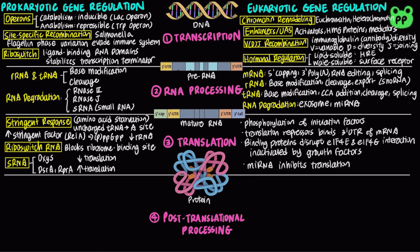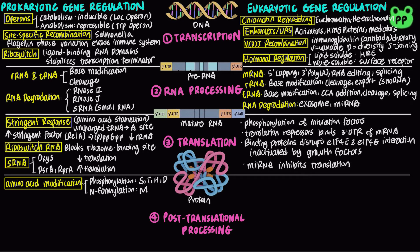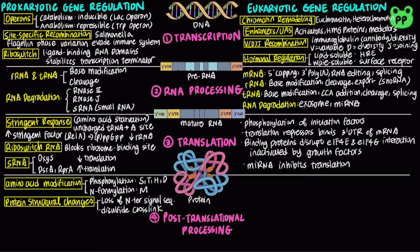The last stage of gene regulation involves post-translational processing. Bacterial proteins undergo two main types of amino acid modification, including phosphorylation of serine/threonine and histidine/aspartate, and formylation of methionine, which serves as the first amino acid during translation. Bacterial protein structural changes include loss of the N-terminal signal sequence after the elongating polypeptide has been directed to the membrane, as well as disulfide cross-links between cysteine residues. Bacterial protein targeting involves the SecA, SecB, and SecYEG translocation complex.